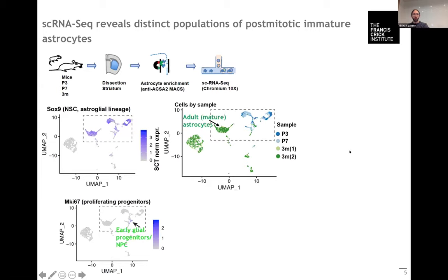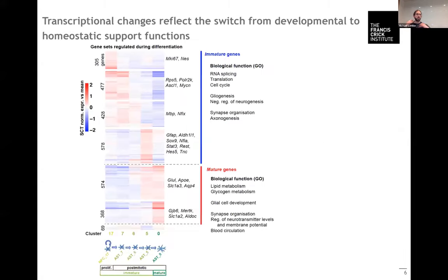There is one major population of adult astrocytes, the mature astrocytes, and a couple of immature populations in between. With this we could reconstruct a hypothetical maturation trajectory from these progenitors over three post-mitotic stages to the adult astrocytes in the adult brain.